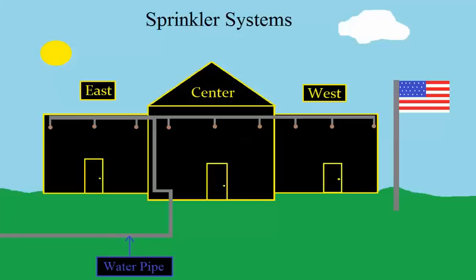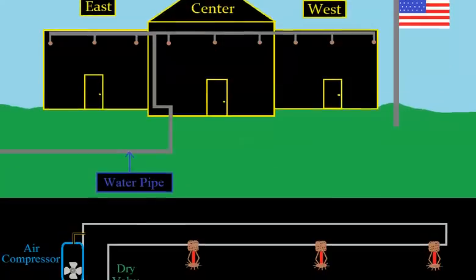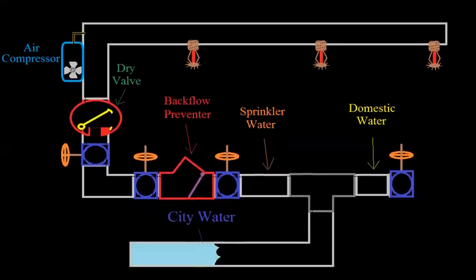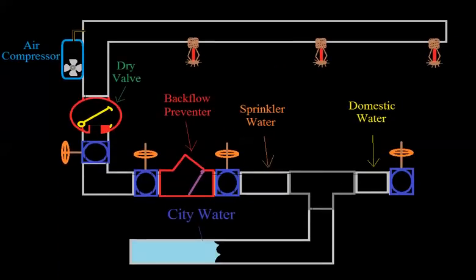So the solution to that is what's called a dry system. I'm going to explain how a dry system works, and this frame looks a lot like one that we looked at the other day, but there's a couple small additions. So we still have our city water incoming on the bottom here. It's going to come in and branch off to domestic water on one side, and the sprinkler water is going to go the other way.